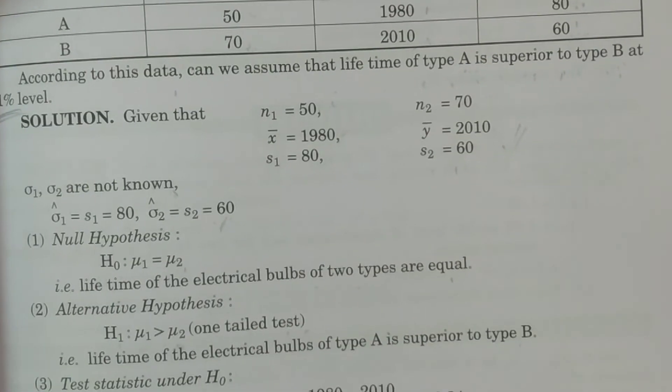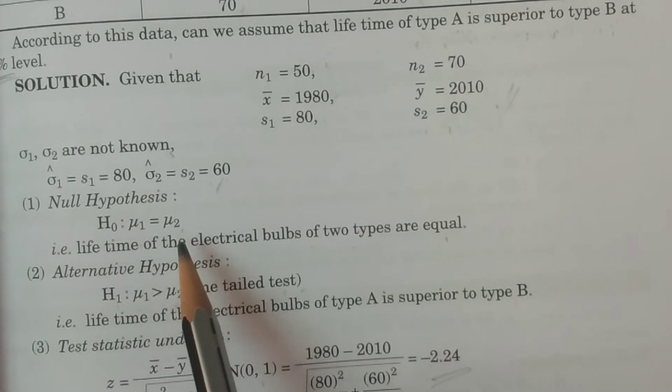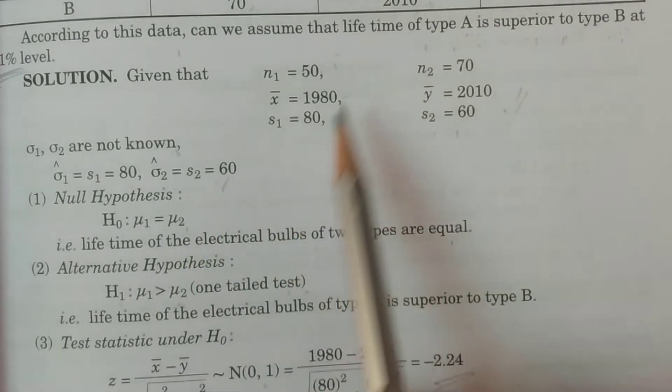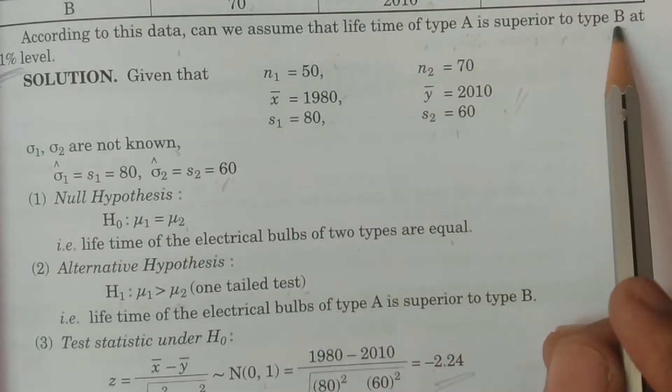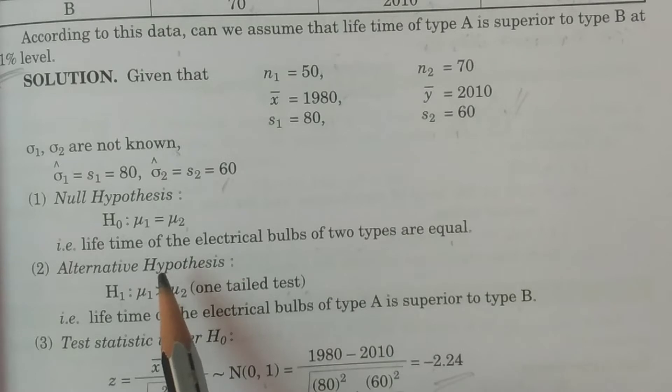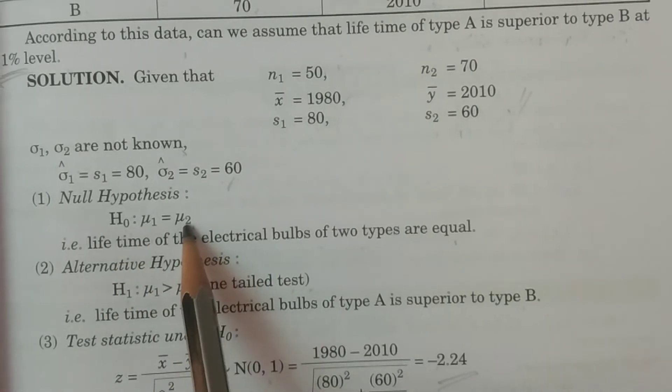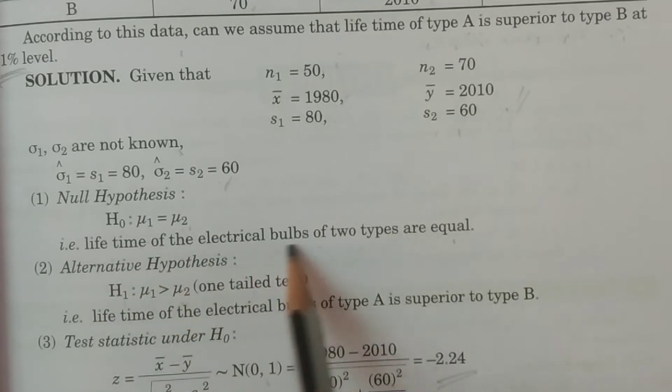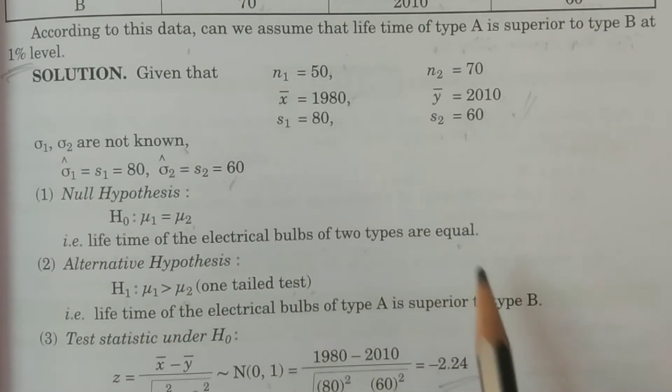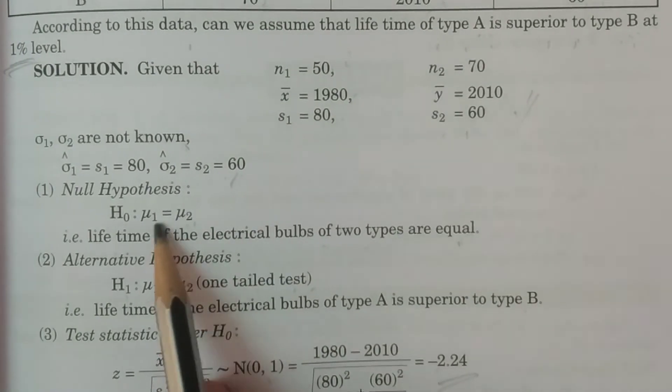Null hypothesis first of all. Null hypothesis is H0: mu1 is equal to mu2. What do we want to test? Type A is superior to type B. We will check null hypothesis of not superior. H0: mu1 equals mu2. That is, the lifetime of the electrical bulbs of two types are equal.